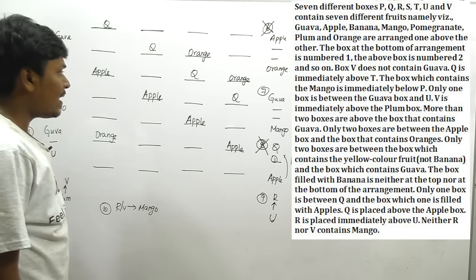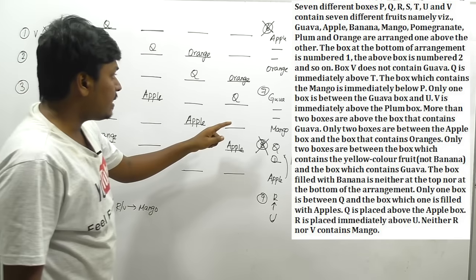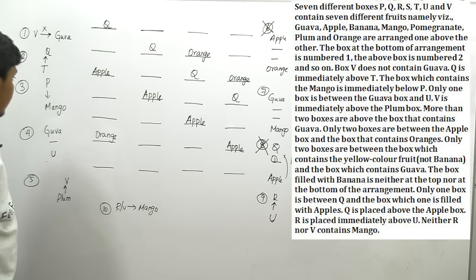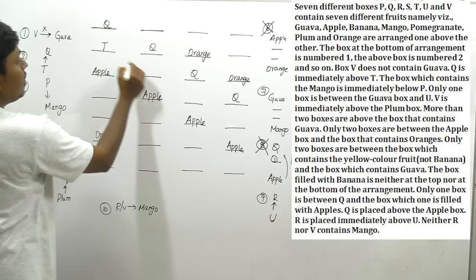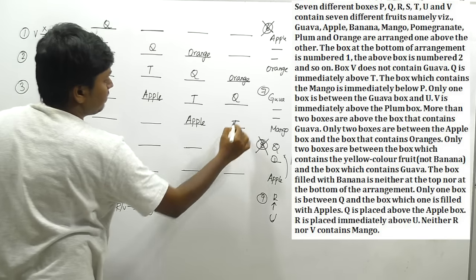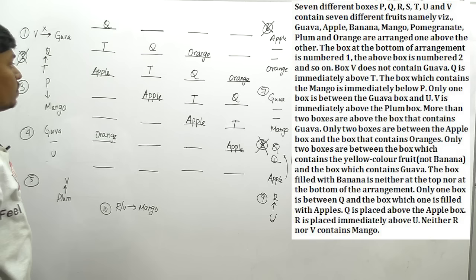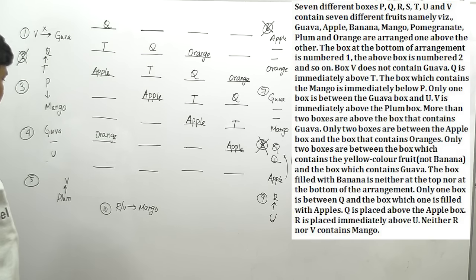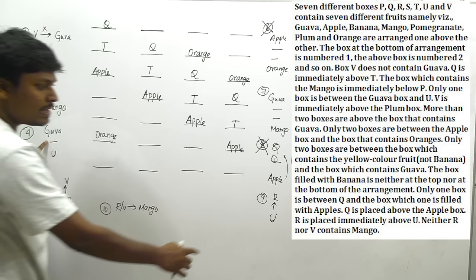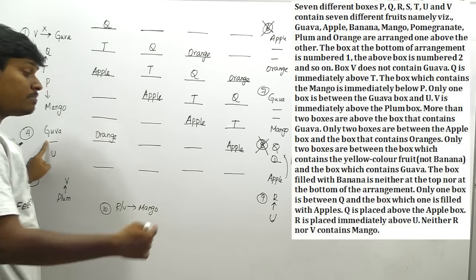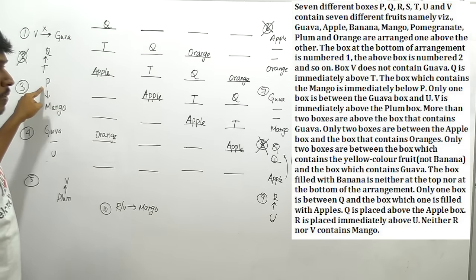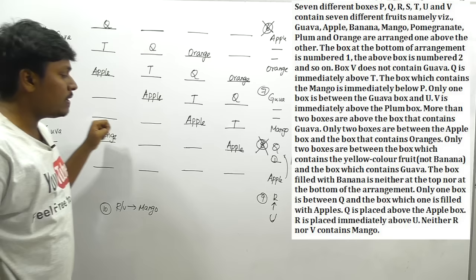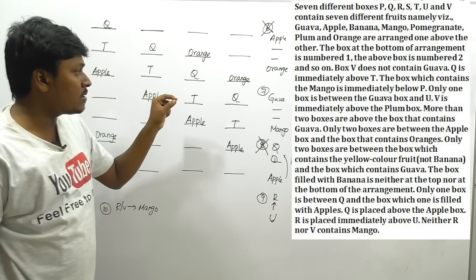Now let me apply clue 2: above T, Q should come — so T is one below Q. I can place T accordingly in each condition. Next, the key combined clue: guava and U have a gap of one box, immediately above U is R, and between guava and mango there is a gap of two. Below P, mango should come. By combining these clues, we can potentially complete the arrangement.